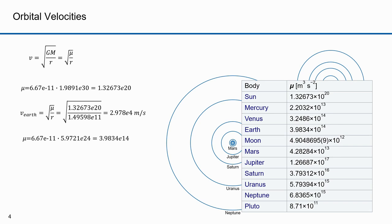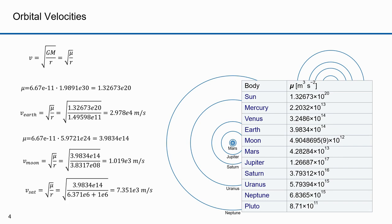The gravitational parameter for the Earth is G times the mass of the Earth. From that I can compute the mean velocity of the Moon: the square root of mu for the Earth divided by the Moon's orbit's semi-major axis, giving 1,019 meters per second. If we launch a satellite at 1,000 kilometers above the surface of the Earth, the semi-major axis would be 6,371,000 meters plus 1,000,000 meters, and the mean orbital velocity would be 7,351 meters per second — about 7.3 km/s. A satellite at that altitude travels more than seven times faster than the Moon.